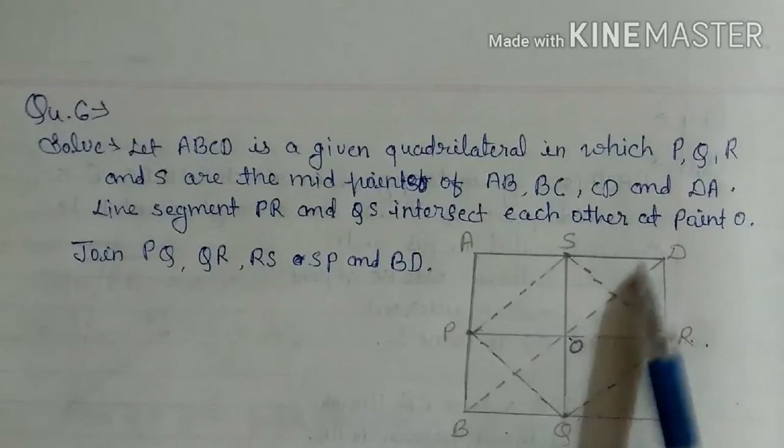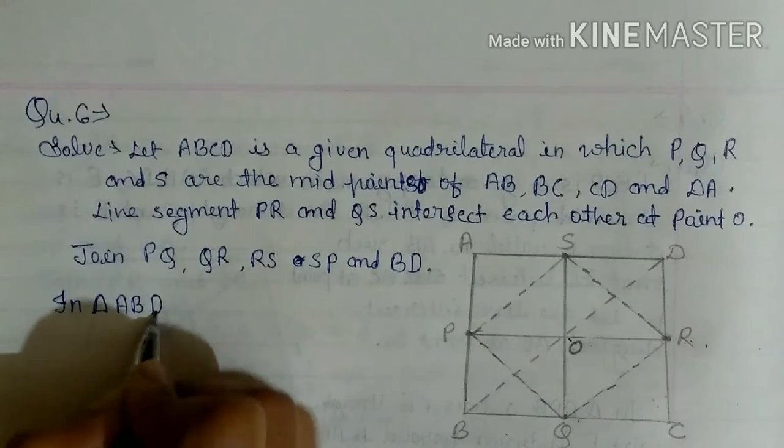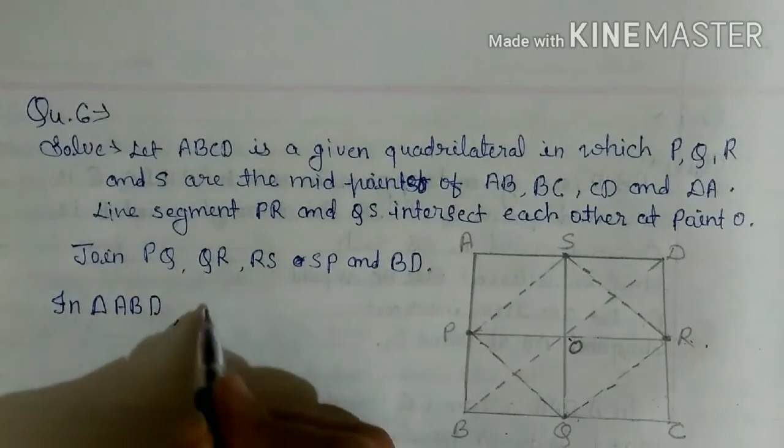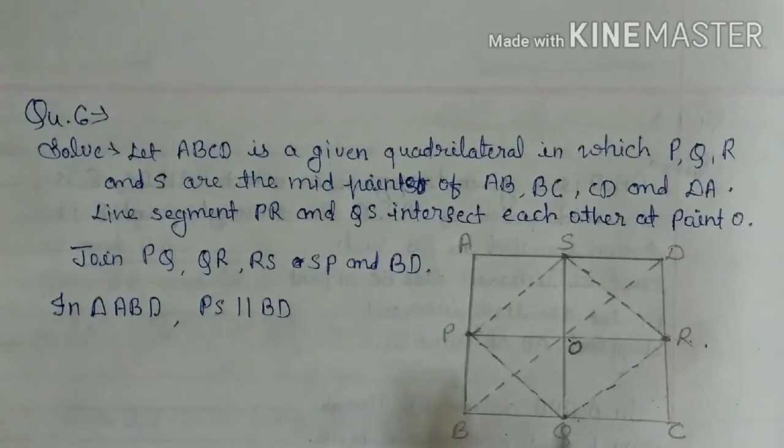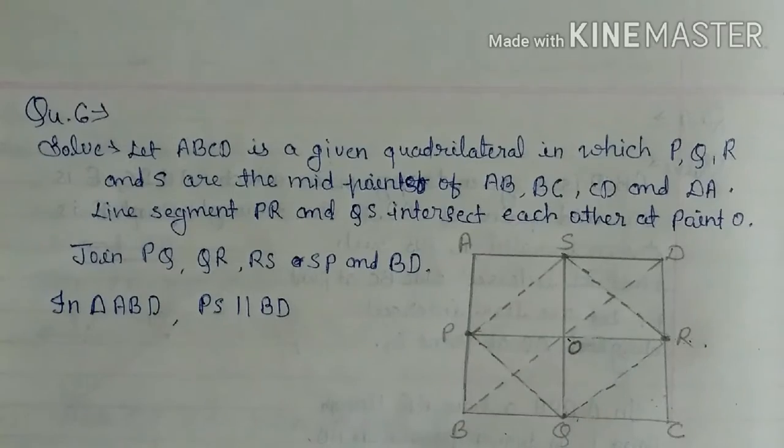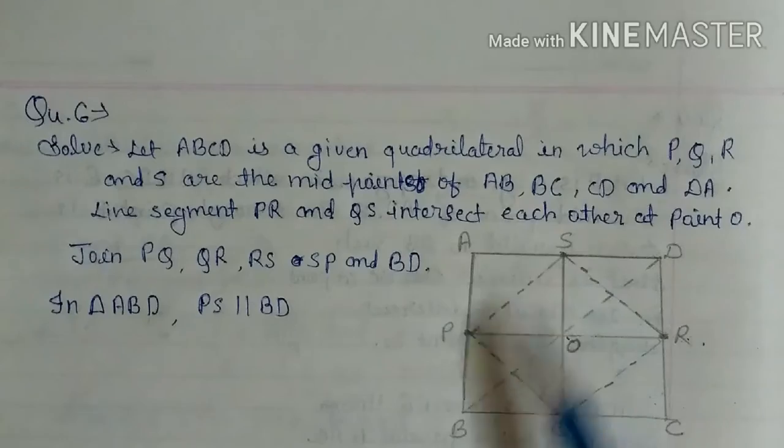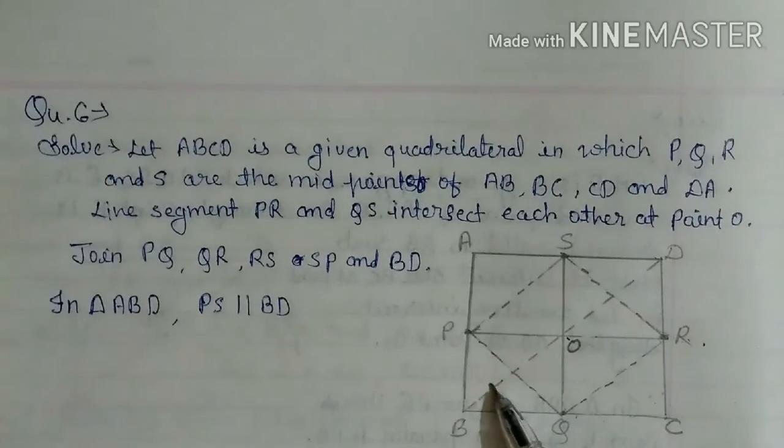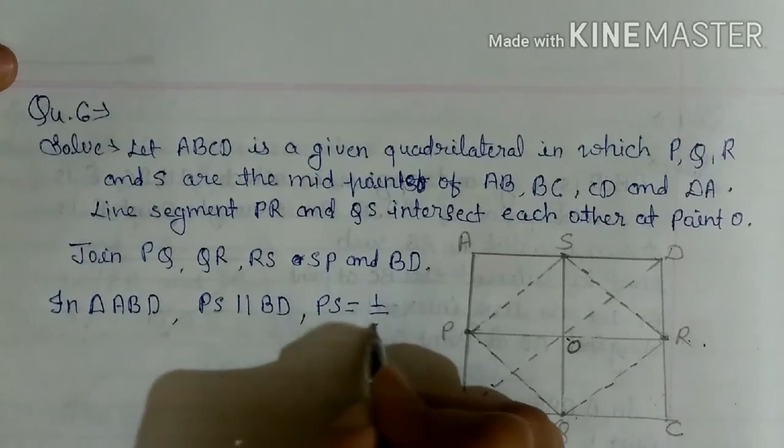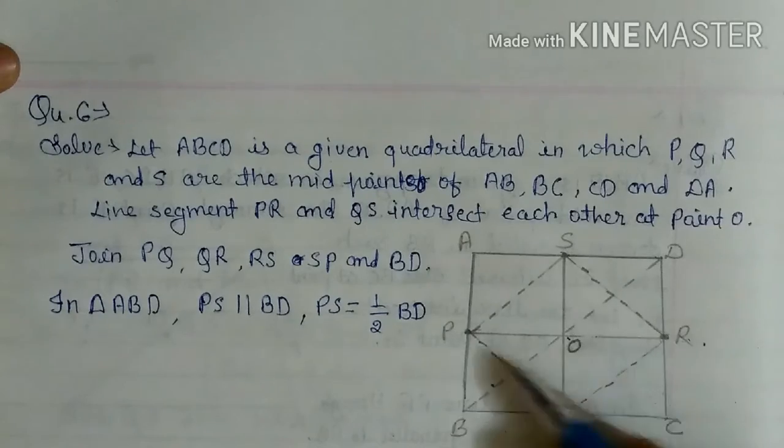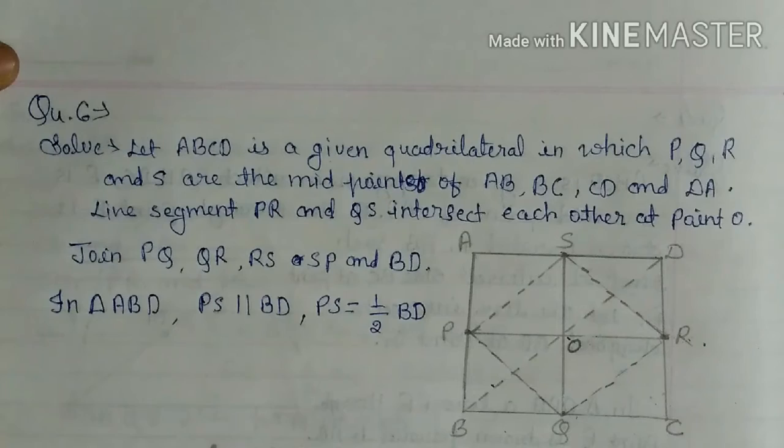So let's start. Now see in triangle ABD. In this triangle ABD, here you see PS parallel BD. PS is parallel to BD. In this triangle you can see one line is drawn. So we see PS is parallel to BD. And on the other side, PS is half of BD. You can see PS is half of BD. A smaller line is drawn here, half of this you can see.